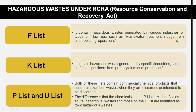The K list includes hazardous waste generated by specific industries, such as spent pot liners. The P and U list contains commercial chemical products that become hazardous waste when they are discarded or intended to be discarded.